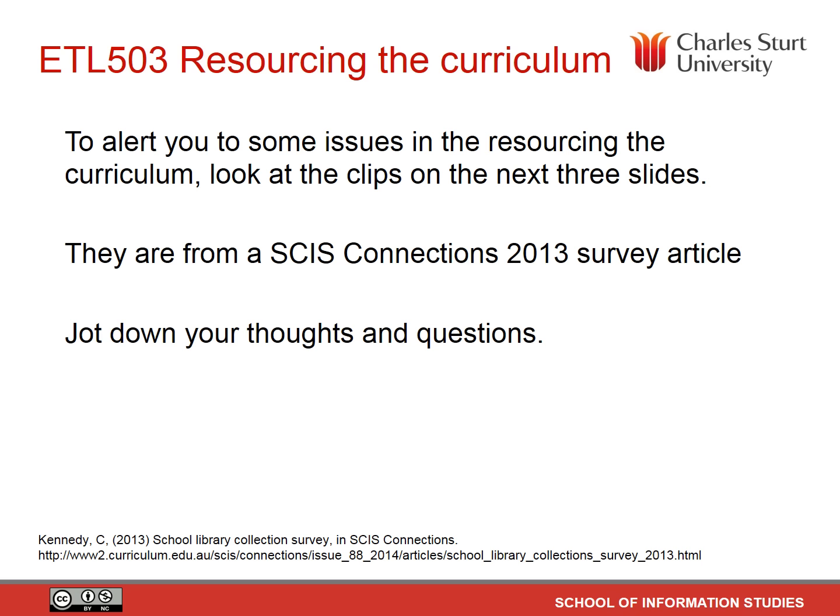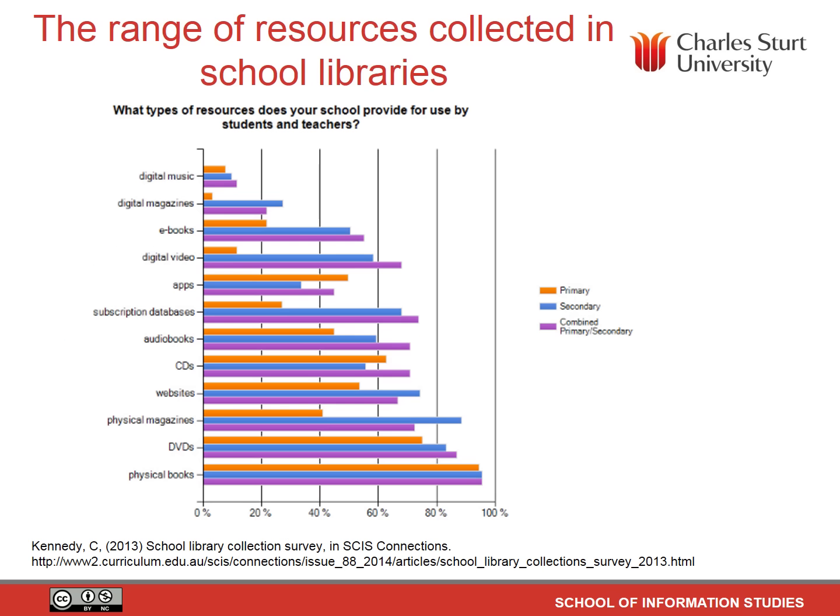We'll look at the clips on the next three slides. They're from a SCIS Connections article in 2013, written by Kennedy, as you see the details below. This first one shows the range of resources collected in school libraries. This was 2013 and it's possible it's changed since then, given the digital thrust forward. What's interesting is that in all kinds of libraries — primary, secondary, or combined — books were still the main resources collected, gradually diminishing through DVDs, magazines, websites, audio books, and subscription databases.